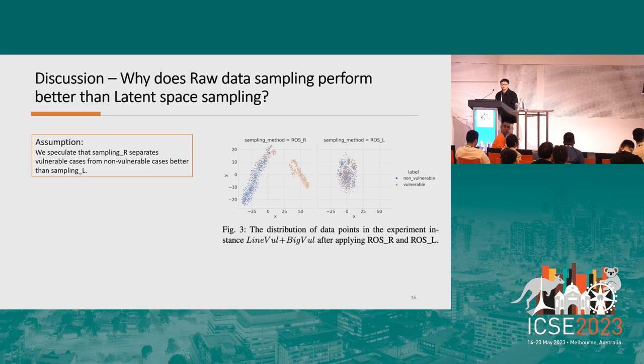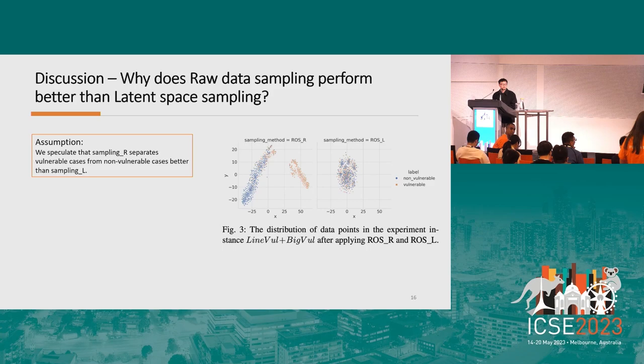Final question: why does raw data sampling perform better than latent space sampling? The assumption is that while sampling on latent space occurs after representation learning, the imbalanced data may cause the representation learning to lose information, making it slightly worse. Even after representation learning, sampling may help the classification model, but the representation learning part is still not optimal. The conclusion is to encourage future research to conduct data sampling on raw data for vulnerability detection tasks.